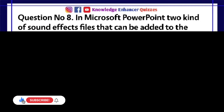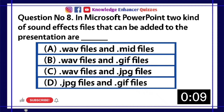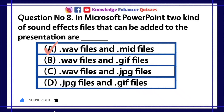Question number 8. In Microsoft PowerPoint, two kinds of sound effects files that can be added to the presentation are: A. Wave files and MID files. B. Wave files and GIF files. C. Wave files and JPG files. D. JPG files and GIF files. Option A is the right answer.